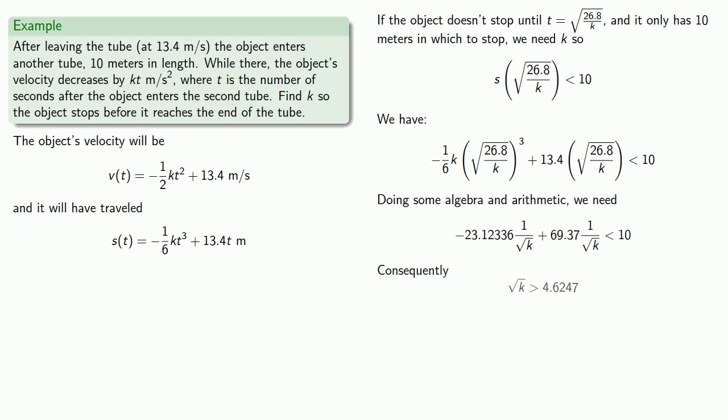After all the dust settles, we find that square root of k has to be larger than 4.6247, and so k has to be greater than 21.3876. If k is greater than this amount, then where the object stops is short of the 10 meter distance, and so the object will stop in time.